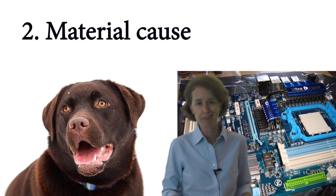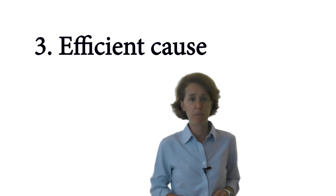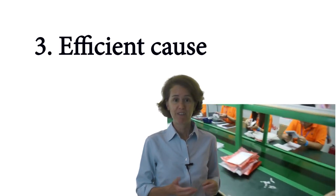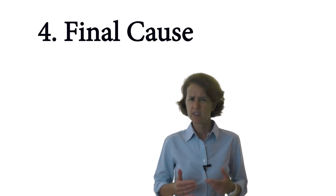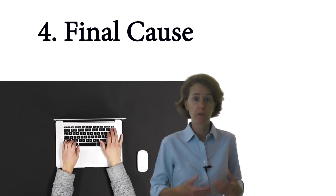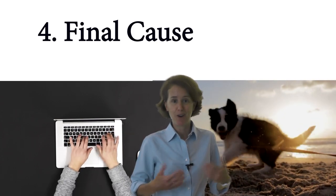Third, the efficient cause: who or what brought this thing about? In the case of a computer, that's complicated — parts are made by workers and machines in some factories, then assembled by workers and machines in other factories. In the case of a dog, that would be the mother and the father. Fourth, the final cause: what is something made for? For a computer, it's so the end user can do all the things the computer enables her to do. For a dog, it's so the dog can do all the things a dog is supposed to do.